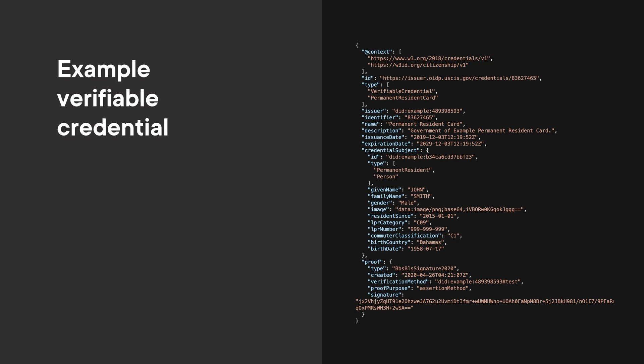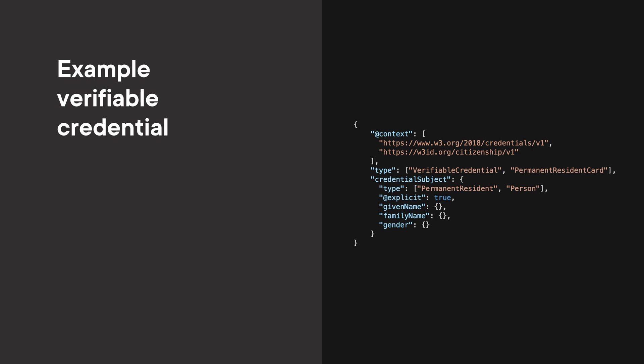Here's an example verifiable credential. The only difference from the one in the SVIP is that BLS is the curve and BBS is the signature type — BBS actually works on any pairing-friendly curve, and we've built out BLS support, so this is a BBS-BLS-Signature-2020. It should look very familiar to those familiar with linked data proofs. This signature is only slightly larger than an Ed25519 signature.